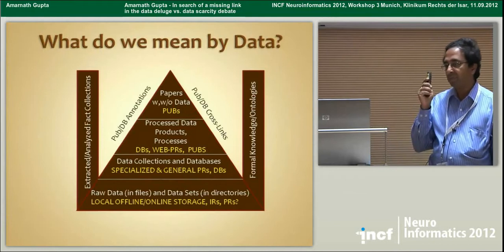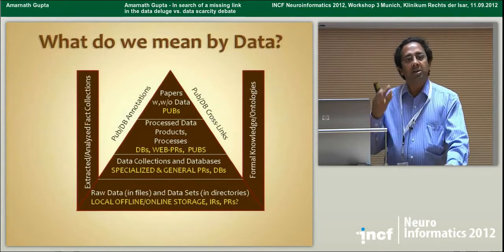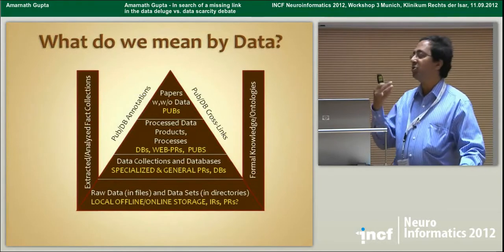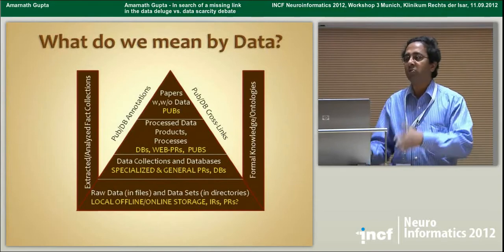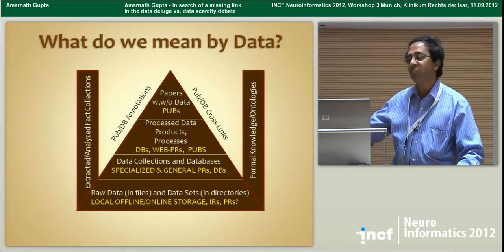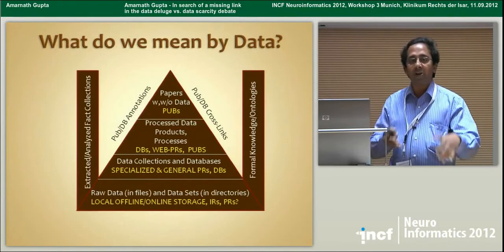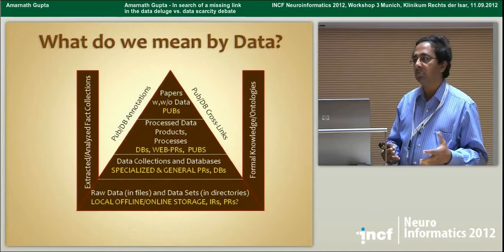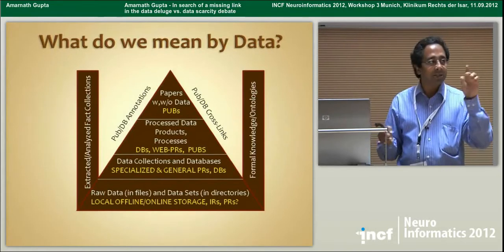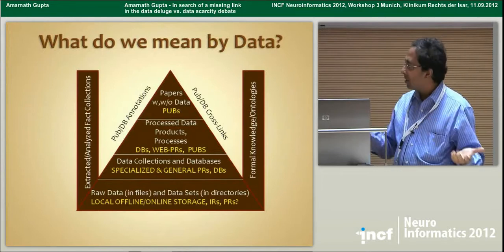Two other things have happened. People have started annotating data and publications. They have started externally relating one piece of data to another piece of data, a publication to a piece of data. Tim's group has this tool called Domeo. The goal is, if you have a publication, you the reader can take this and associate it with other things. You can say this is an antibody, and that's something we do with them using Domeo and other tools.